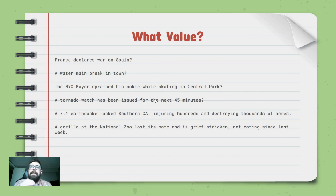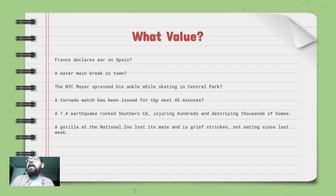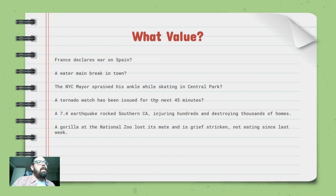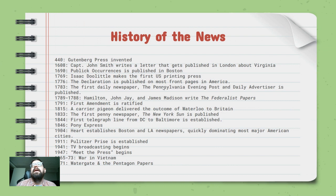A 7.4 earthquake in southern California injuring hundreds and destroying thousands of homes — that's huge impact. And a gorilla at the National Zoo losing its mate and being grief-stricken, not eating since last week — that's novelty. We usually think of novelty stories as fun soft-news items, though this one is more of a sad story.